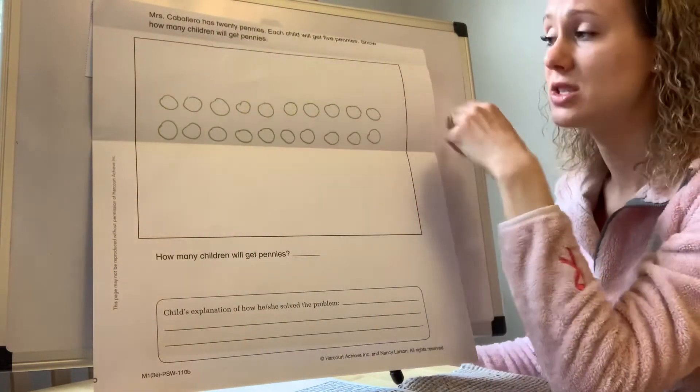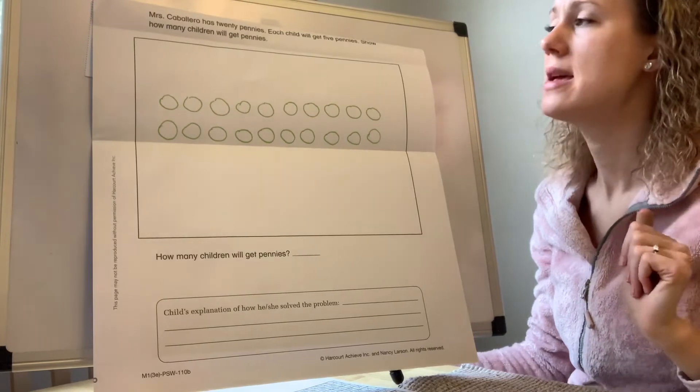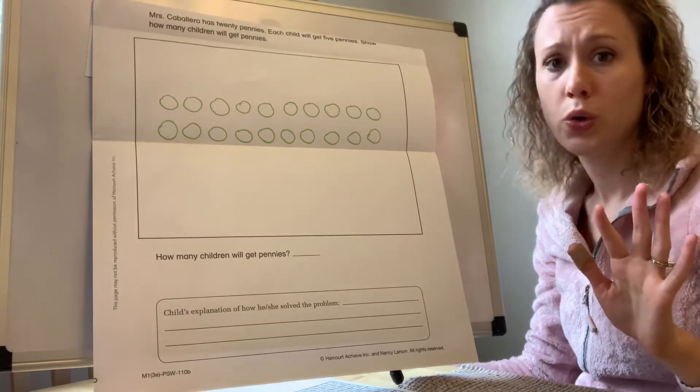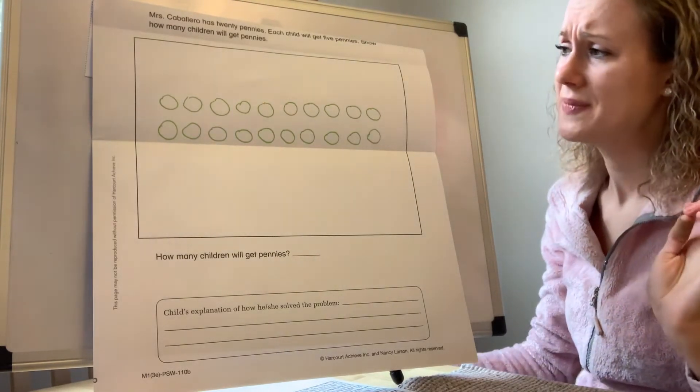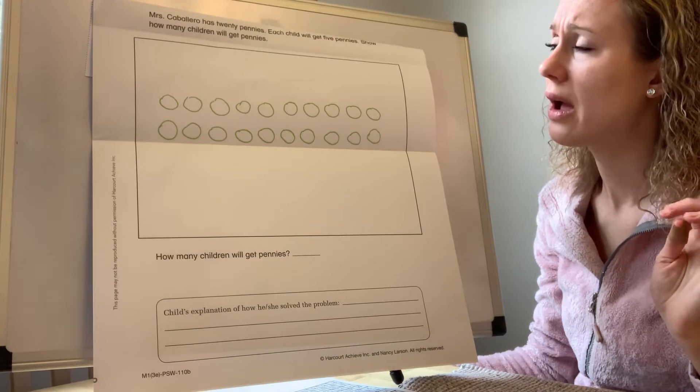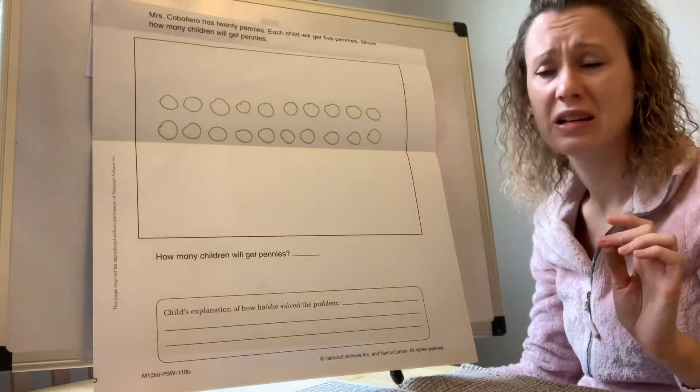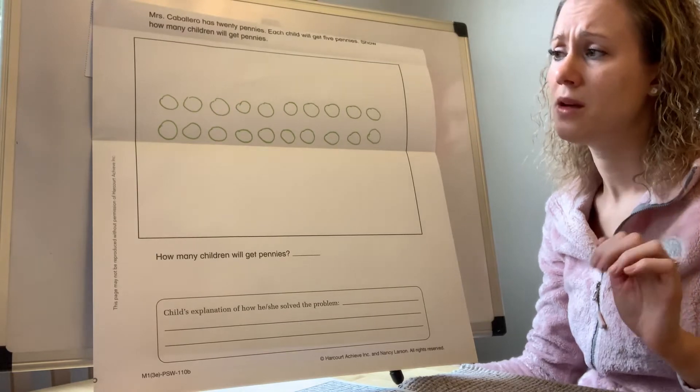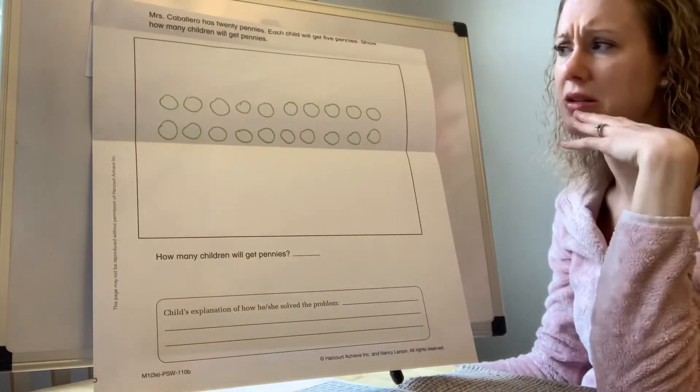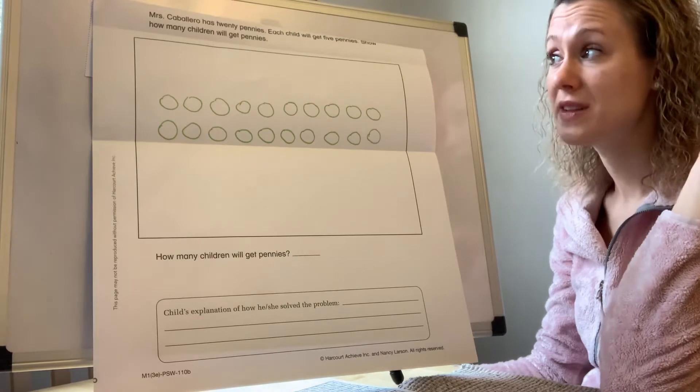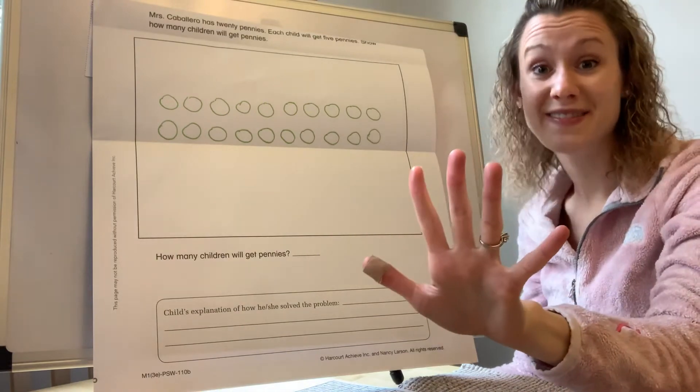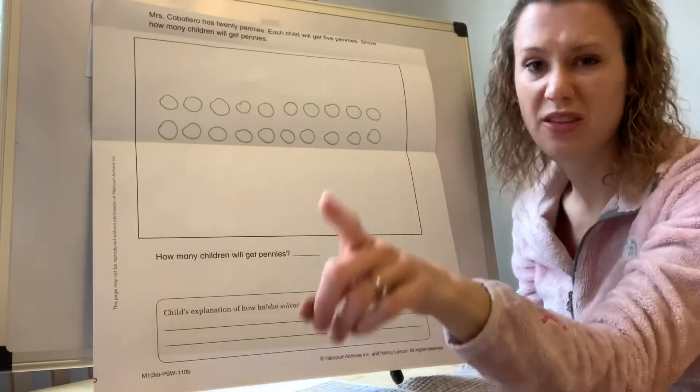So Mrs. Caballero has 20 pennies. We got that. Check. Then it says each child will get five pennies. How are we going to do that? This is really hard. How are we going to know how many children get pennies? Well, on the other side, remember we circled in the pairs. Do you think we could do circles again? So if it says that every child gets five pennies, we're going to put a circle around how many pennies? So here, watch what I do, and then we'll do it together. So just watch me right now.